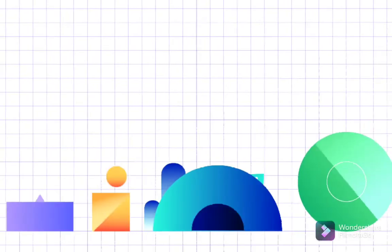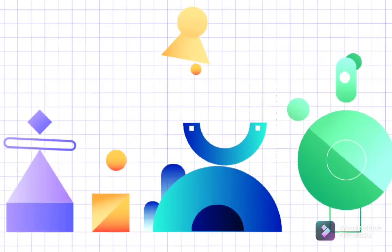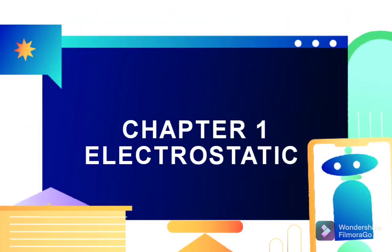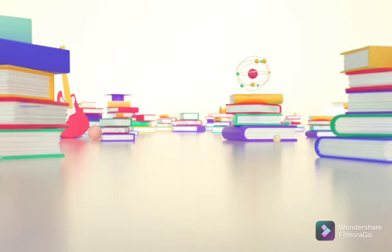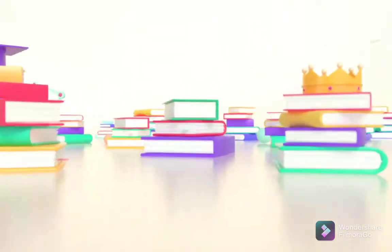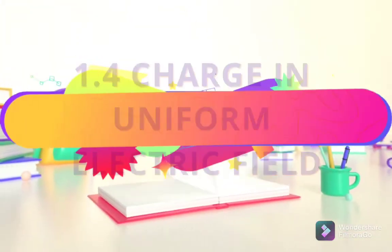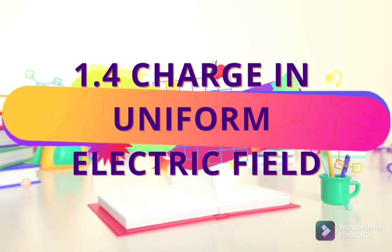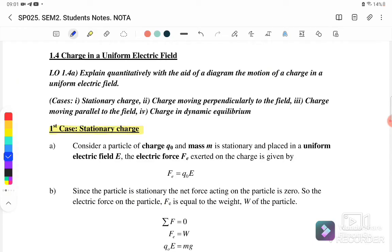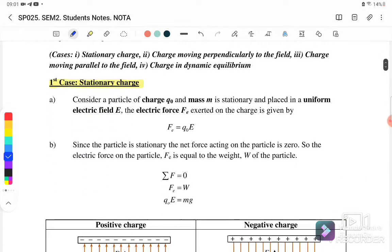Welcome to my channel. Today we will continue with Chapter 1: Electrostatics. In this video we will discuss subtopic 1.4, charge in a uniform electric field. In this subtopic there are four cases: the first is the stationary charge, the second is the charge moving perpendicular to the field, the third is the charge moving parallel to the field, and the fourth is the charge in dynamic equilibrium.